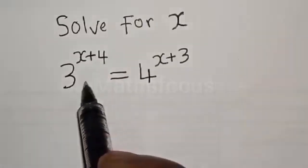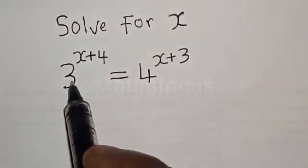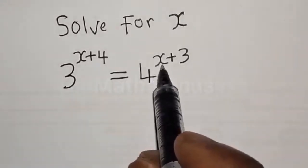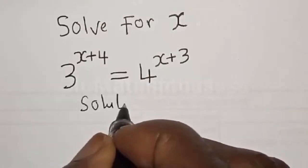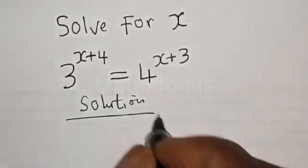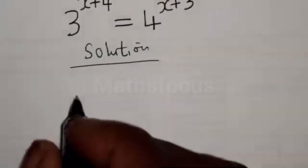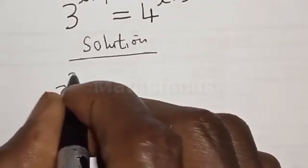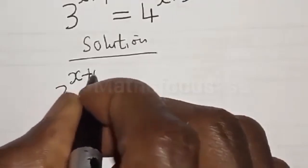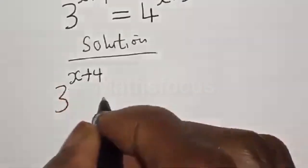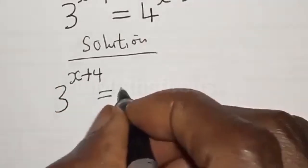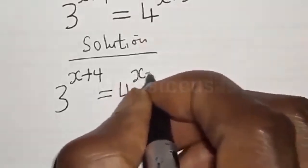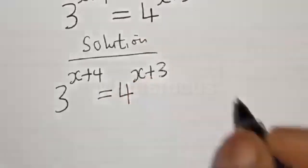Solve for x: 3 raised to the power x plus 4 is equal to 4 raised to the power x plus 3. We have the given equation: 3 raised to the power x plus 4 is equal to 4 raised to the power x plus 3.